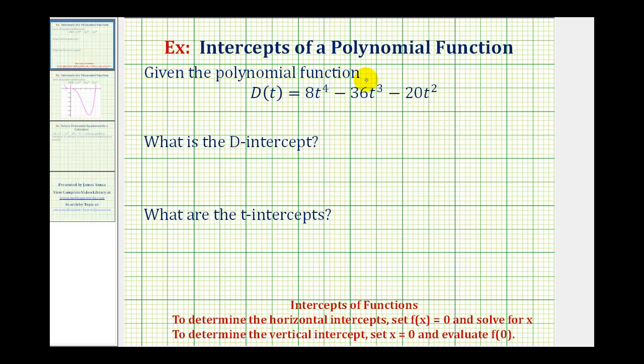Here we're given the polynomial function D(t) = 8t⁴ - 36t³ - 20t². We're asked what is the d-intercept and what are the t-intercepts.